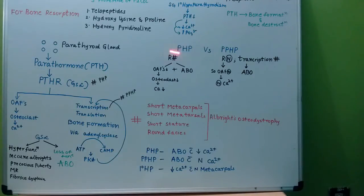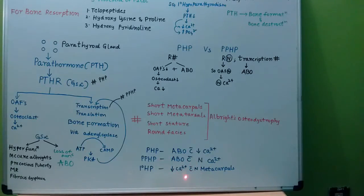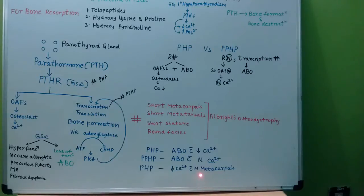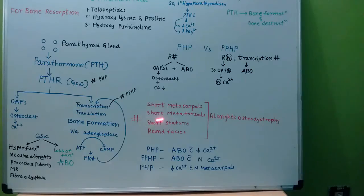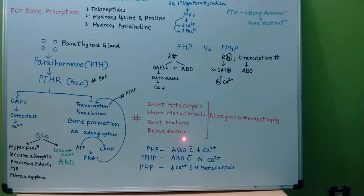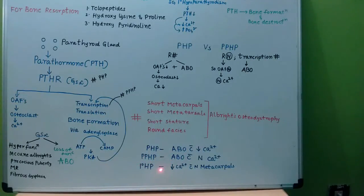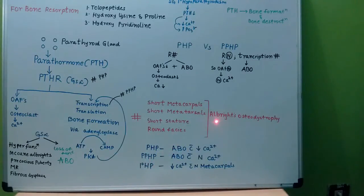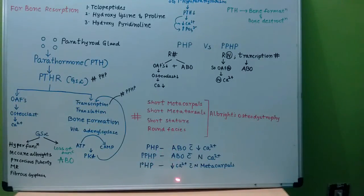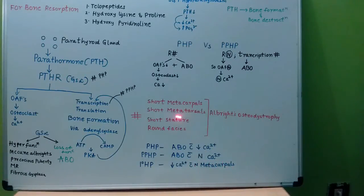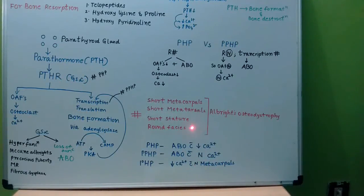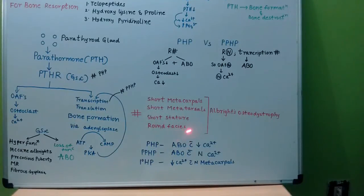What about primary hypoparathyroidism? In primary hypoparathyroidism, they will mention decreased calcium levels with normal metacarpals. If any features like short metacarpals, short metatarsals, short stature, or round faces are mentioned in the question, first rule out the primary hypoparathyroidism option. In primary hypoparathyroidism, there will be no Albright's osteodystrophy — just decreased calcium with normal metacarpals, normal metatarsals, normal stature, and no round faces.